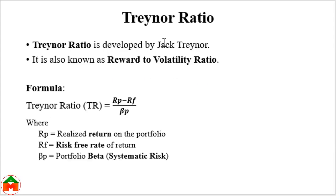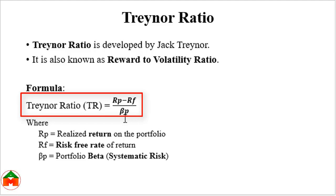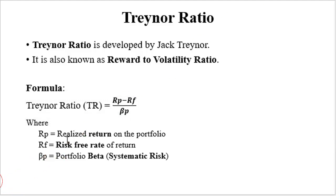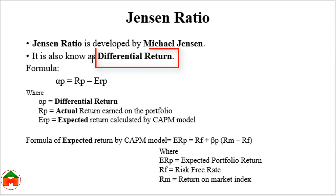The Sharpe ratio is also known as the reward-to-variability ratio. On the other hand, the Treynor ratio is also known as the reward-to-volatility ratio. The formula of the Treynor ratio is very similar to the Sharpe ratio: the upper level is (Rp minus Rf), divided by beta p. Here beta p means the systematic risk of the portfolio. Rp means the actual return, Rf means the risk-free rate, and beta p means the systematic risk.